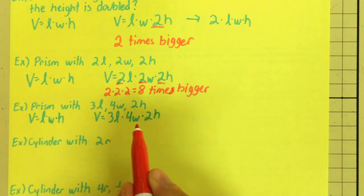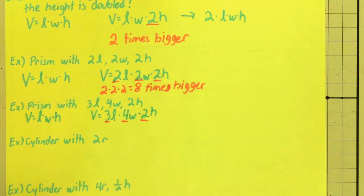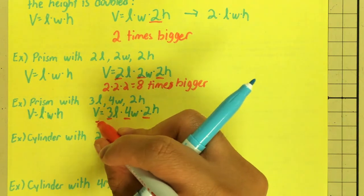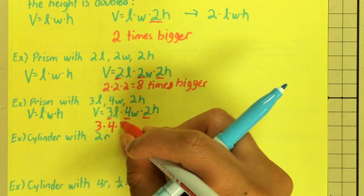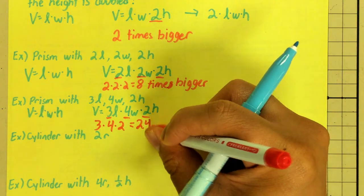Again, LWH becomes 3L4W2H. Those numbers are different, so we can take these numbers. 3 times 4 times 2. 3 times 4, 12 times 2. 24 times bigger.